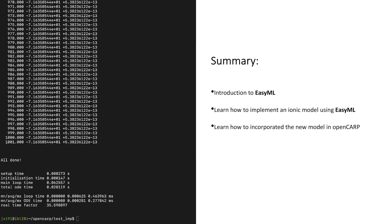So in this video tutorial, you have an introduction to ECML. You learned how to implement an ionic model using ECML in a very simple and clear way. You learned how to incorporate a new model in OpenCARB in just a few steps. For more information, you can visit our webpage, look at our documentation and our examples.